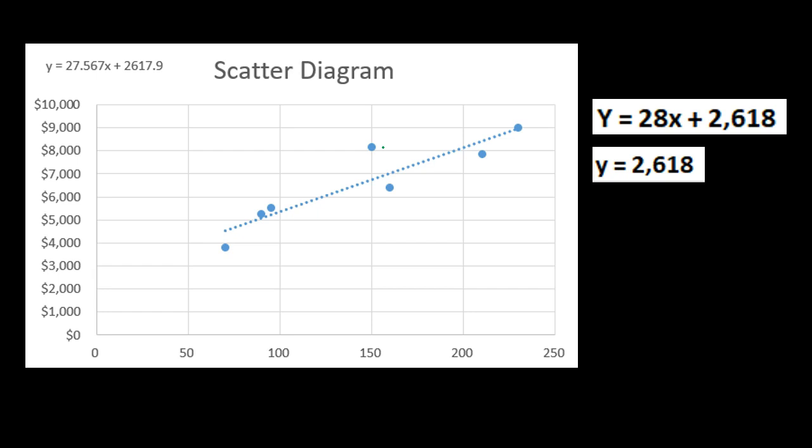We can do the similar process with this once we get that trend line, and we will show in the examples how to do this in Excel. We can plot this, make the graph, use Excel to give us our trend line, and use Excel to help us get a formula. Once we have a line, we can get the formula for the line, which in this case is going to be y equals 27.567x plus 2,617.9.